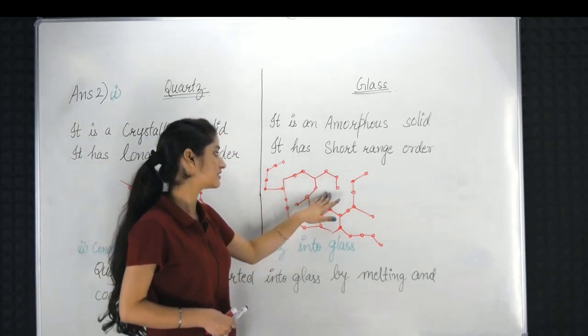Here we can see the constituent particles are arranged completely randomly. This is an amorphous solid.